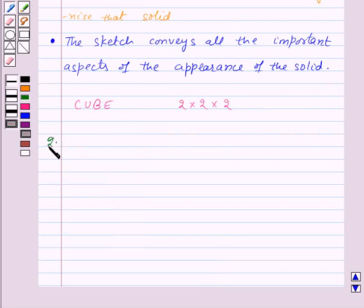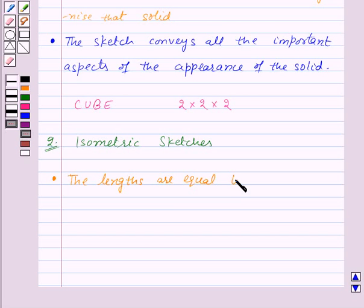So, let us learn what are isometric sketches. In isometric sketches, the lengths are equal to the exact measurements of the solid.